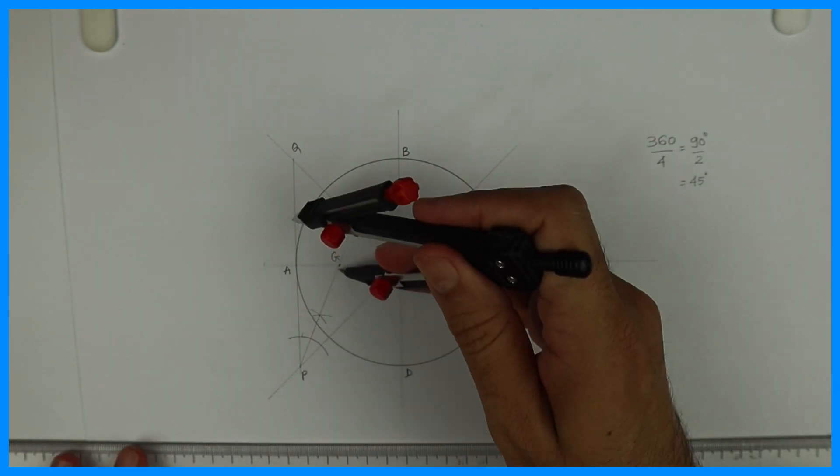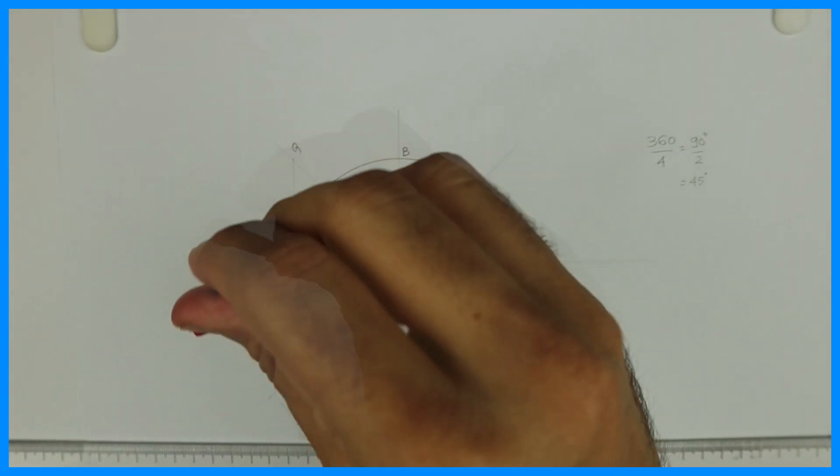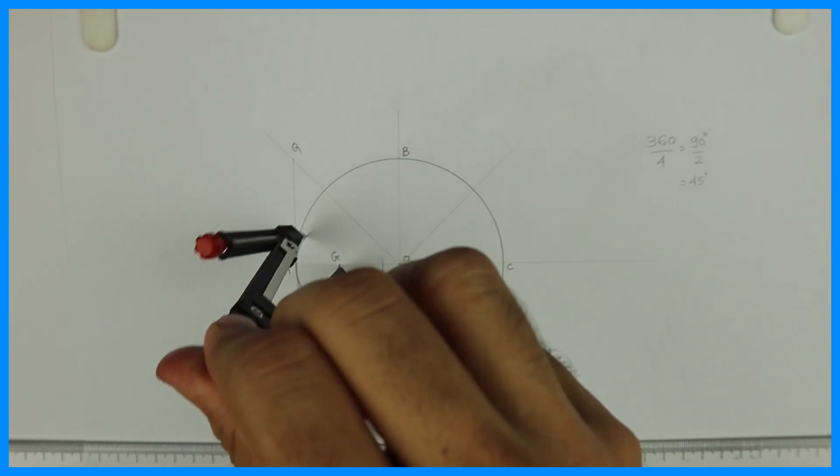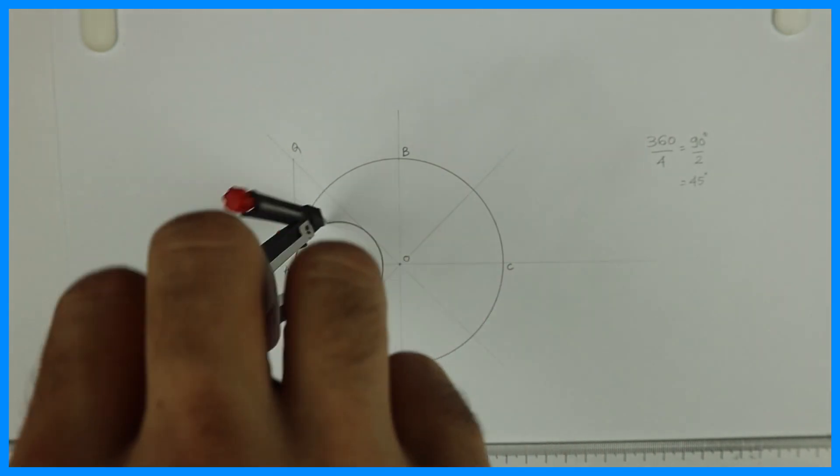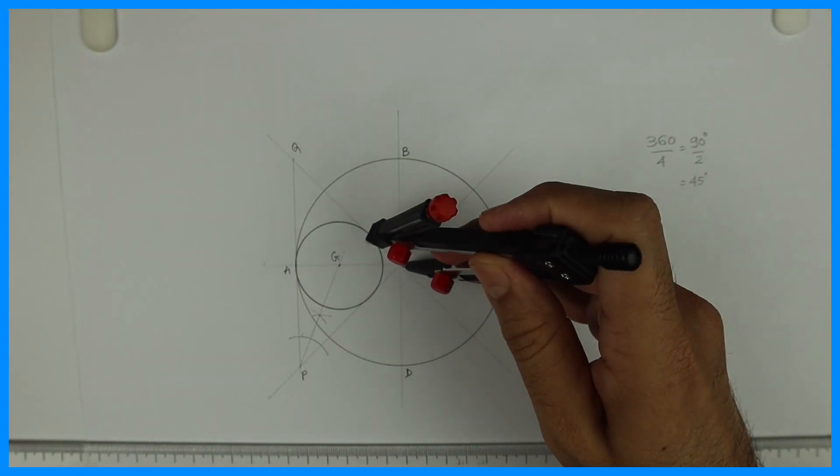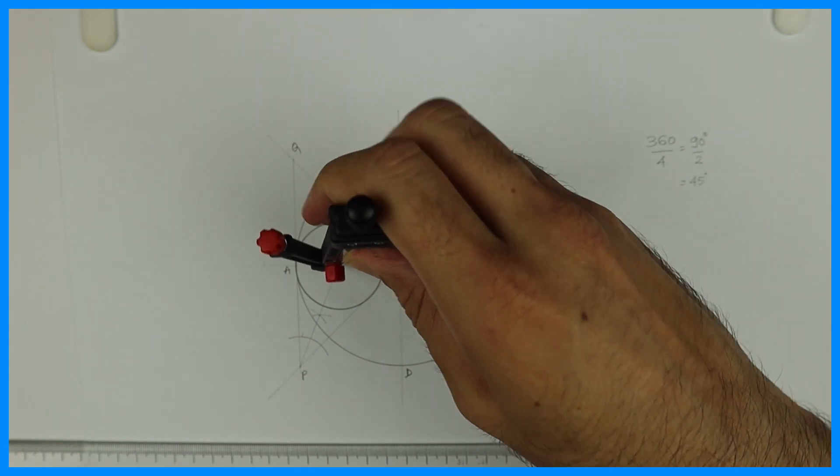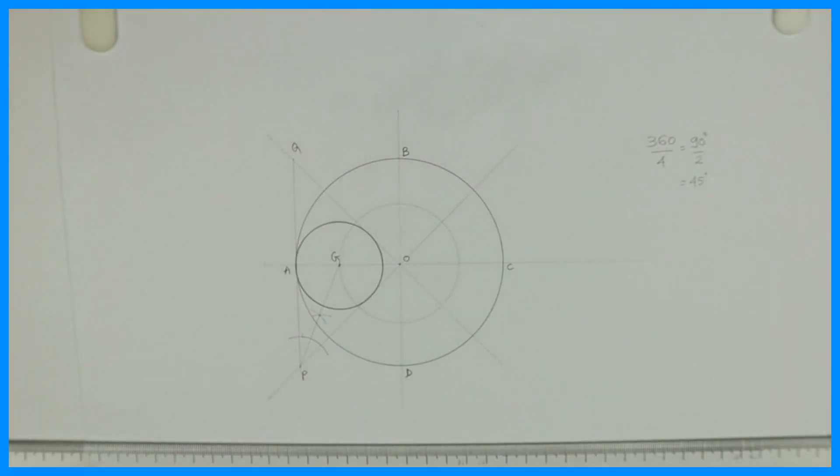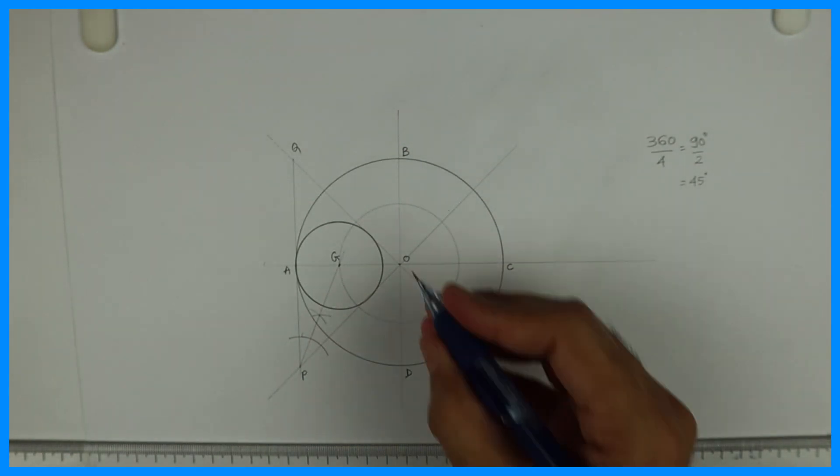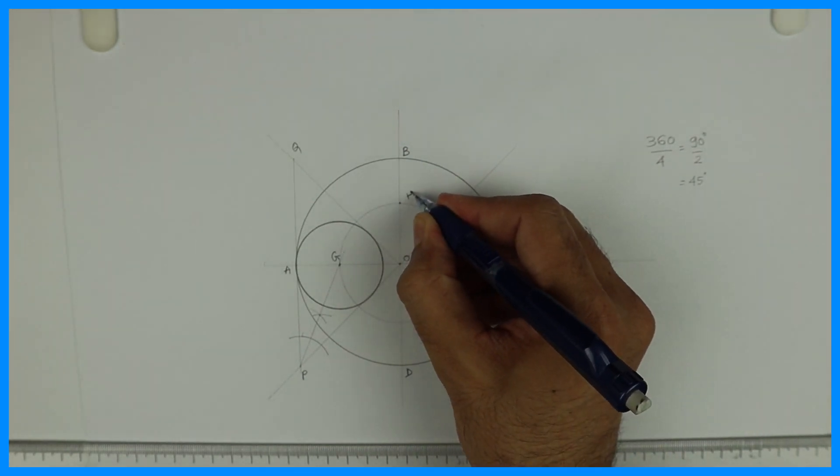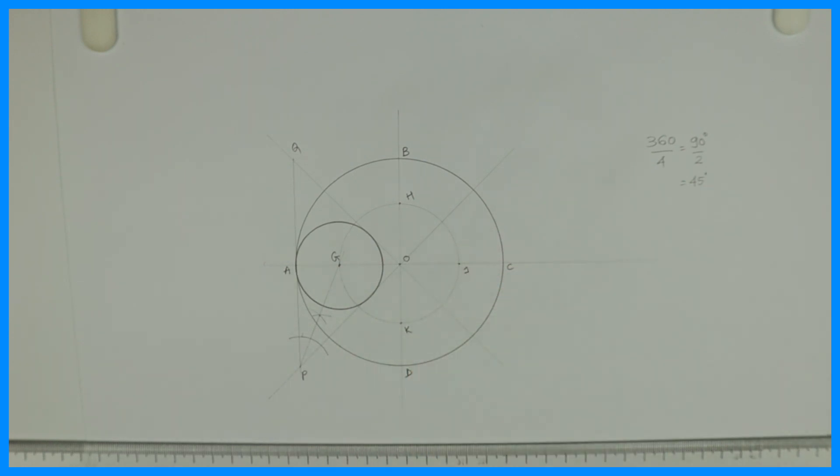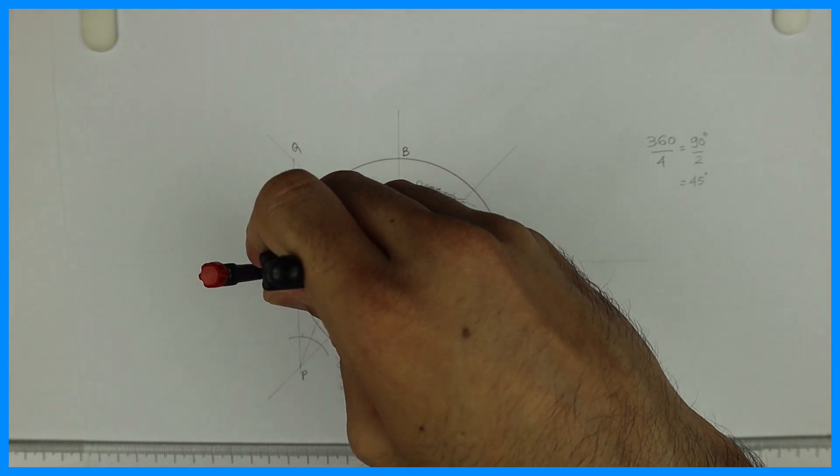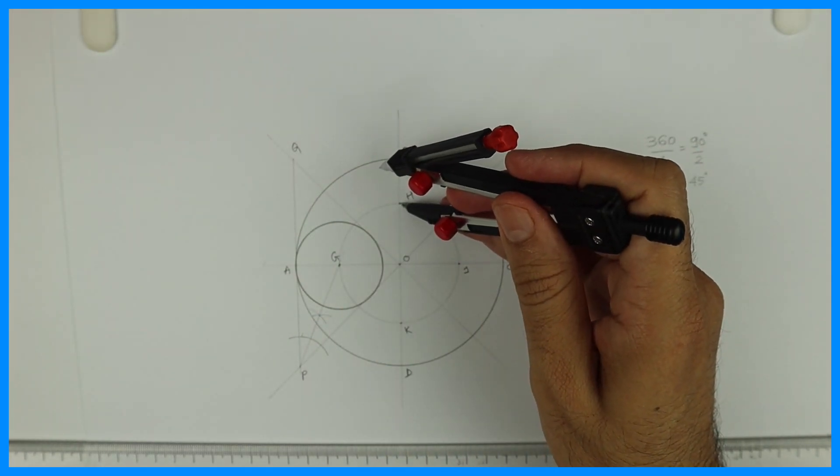G, right. Now what I have to do is G to A and I have to draw a circle. Then I will take O to G and I will transfer this center through the circle. This is H, this is J, and this is K. So we'll take the same radius G to A or we can take H to B, whatever we want, it will be the same.